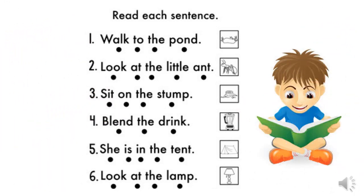Here, my lovely students, I want you to practice your new blends by reading these sentences. Number one: walk to the pond. Two: look at the little ant. Three: sit on the stump. Four: blend the drink. Five: she is in the tent. Six: look at the lambs. Now repeat them.